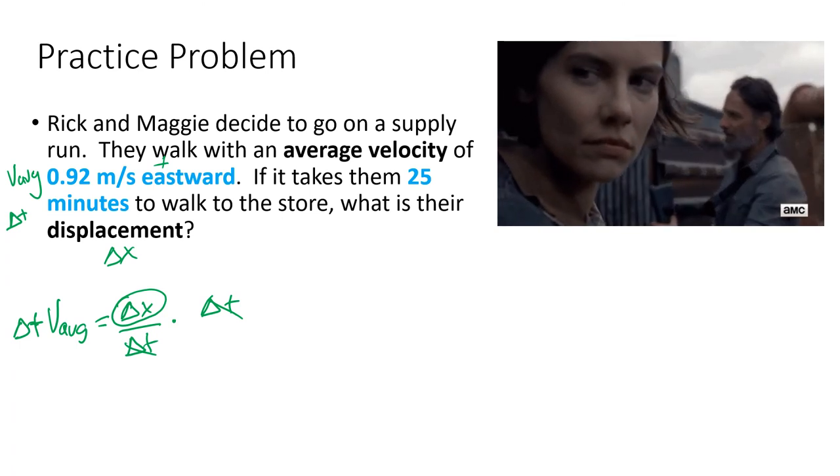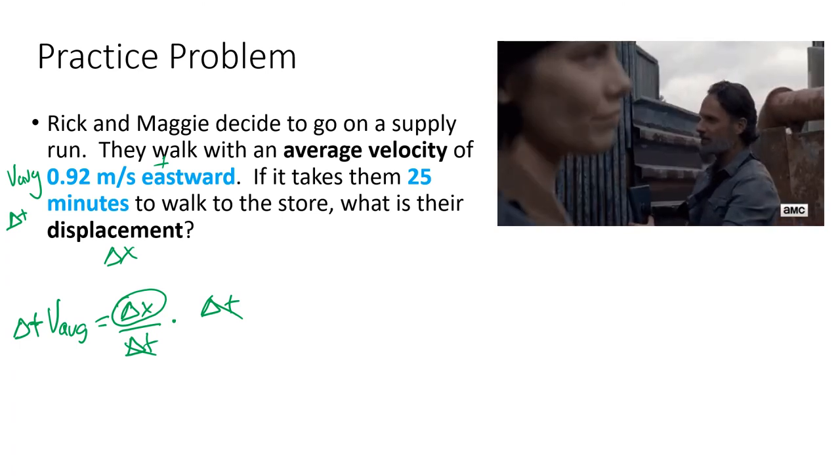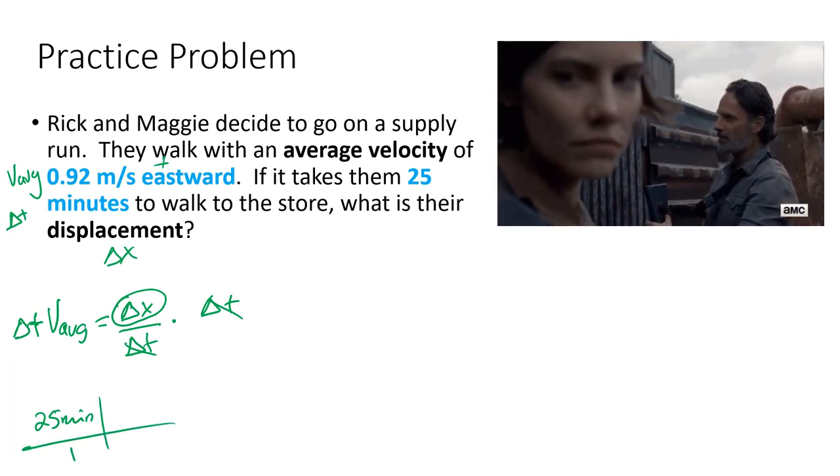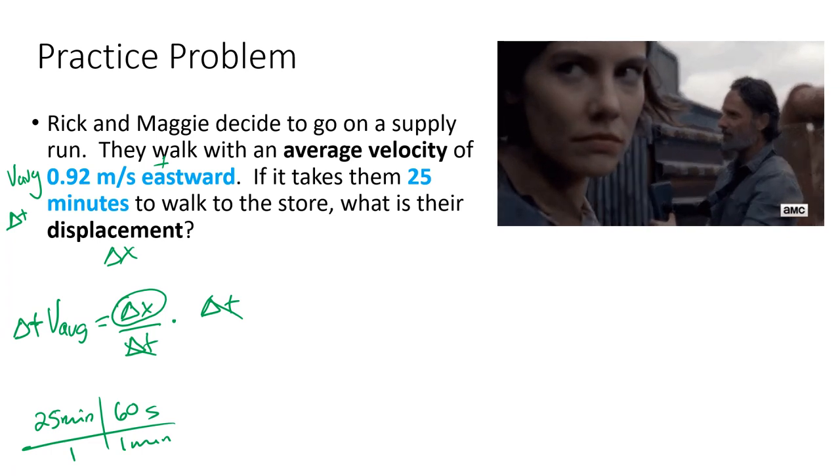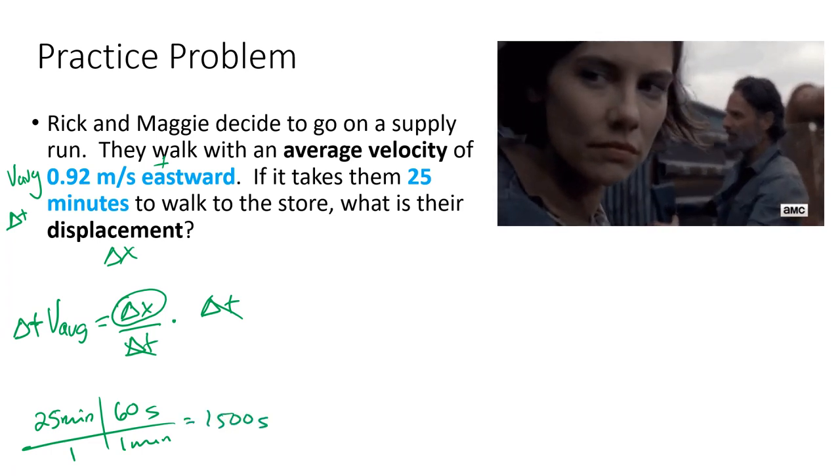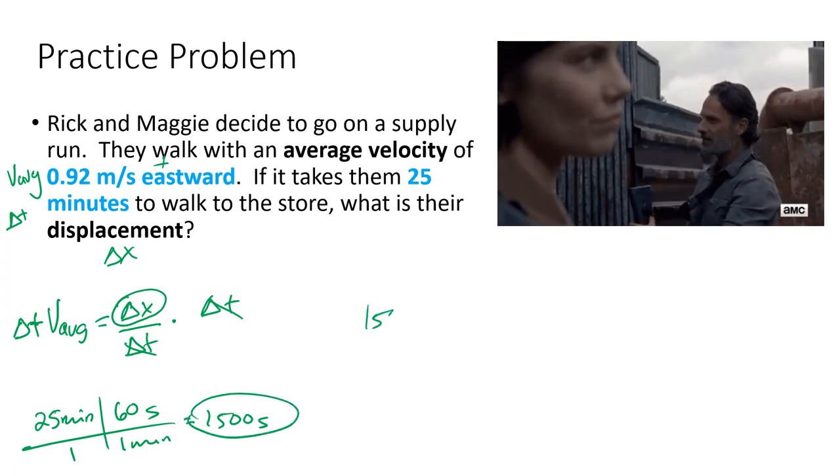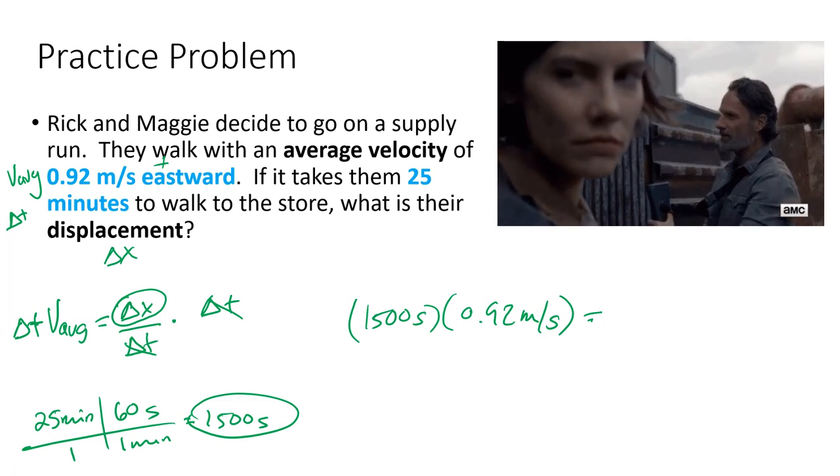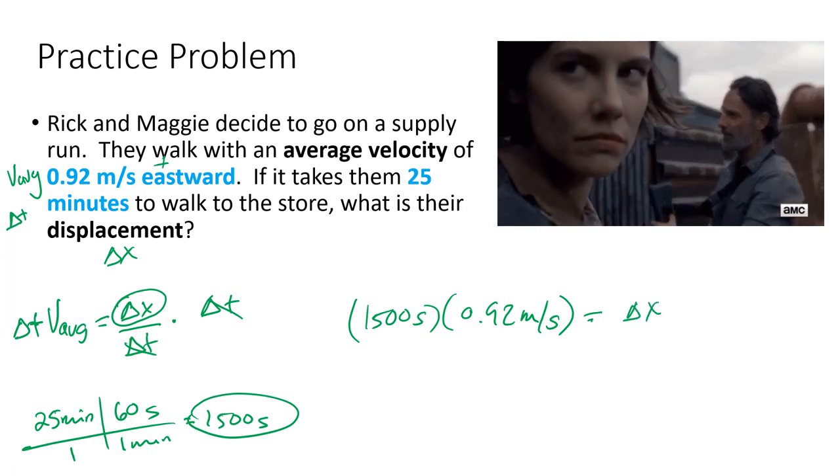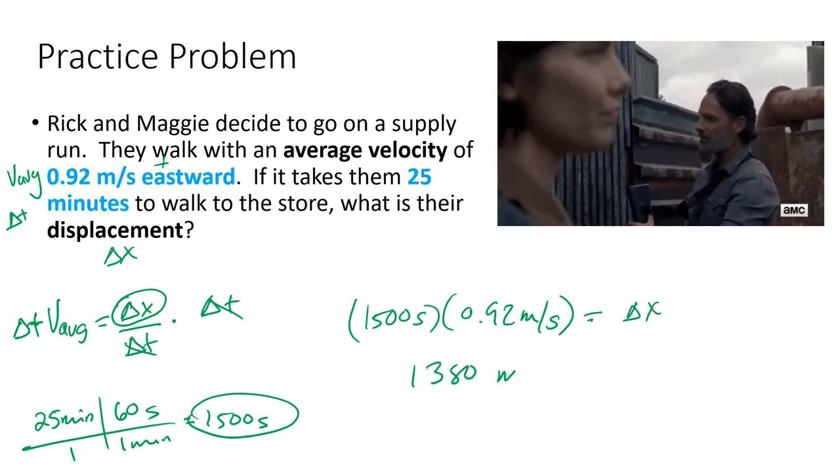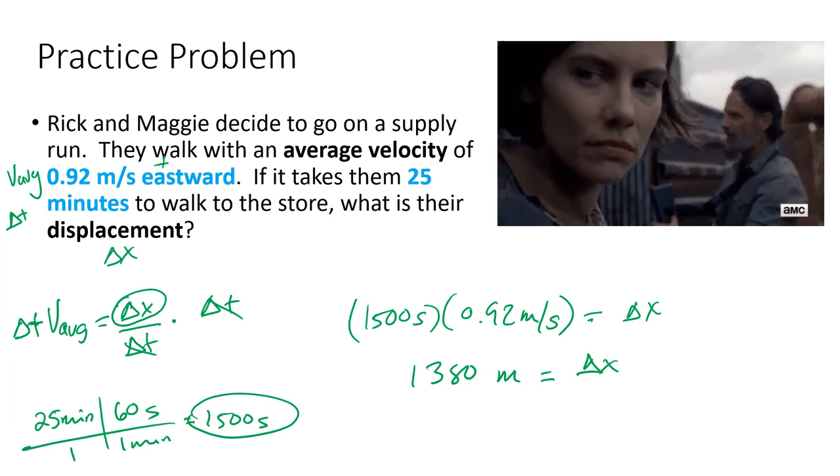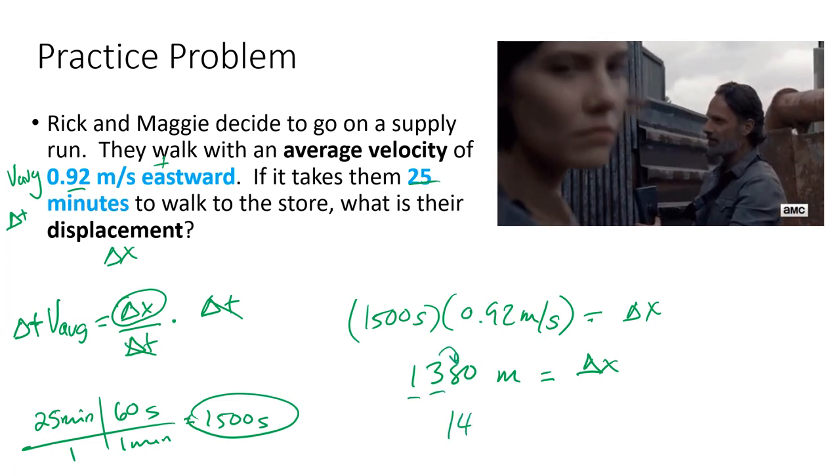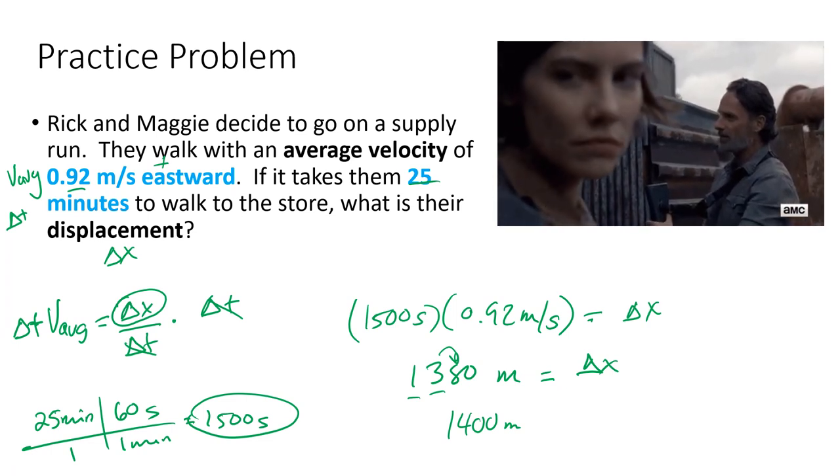However, notice how my velocity is meters per second. So I've got to convert my minutes to seconds first. 25 minutes, one minute is 60 seconds, so that is 1,500 seconds. So then I'm going to plug this in for delta t. It's 1,500 seconds times 0.92 meters per second eastward, so it's positive. That is my delta x. 1,500 times 0.92 is 1,380 meters. Two sig figs for both my numbers, so 1,400 meters. 1,380 is close to 1,400, so I'm good with that. Box it in. Very good.